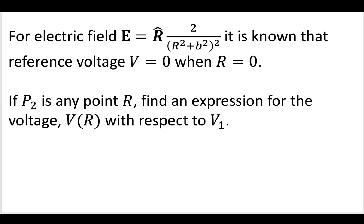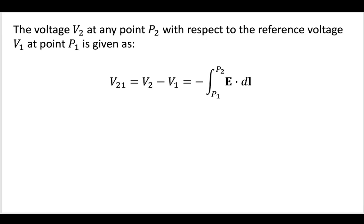So we're going to try to find an expression for the voltage at any point R with respect to voltage V1. So if P2 is any point R, then we can find a general expression for the voltage V(R) with respect to V1. Now this is often given using this equation, where we can say that the potential at point 2 with respect to the potential at point 1 is equal to this path integral from point P1 to point P2 of the field dot with some differential length, which follows a differential path along the system from point 1 to point 2.